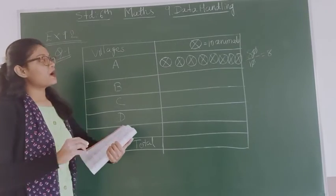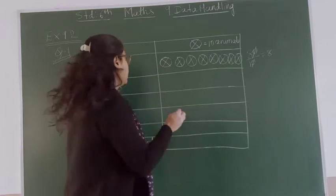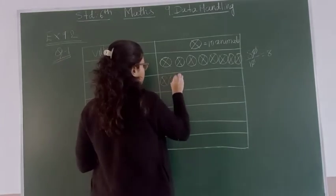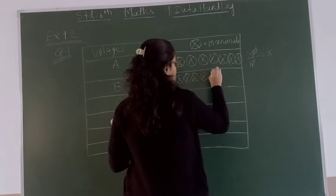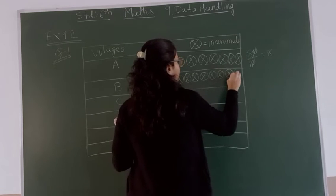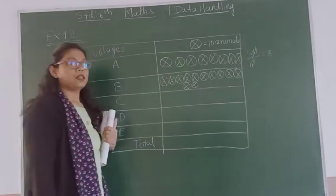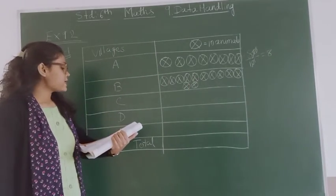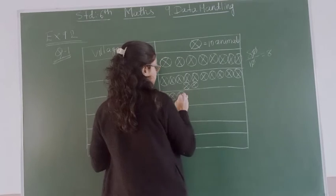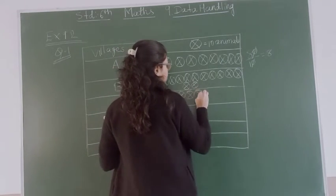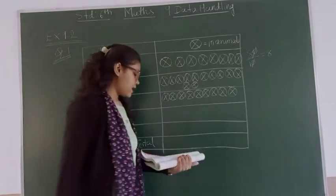Next, village B has 120, so how many symbols you have to draw? 12 symbols: 1, 2, 3, 4, 5, 6, 7, 8, 9, 10, 11, and 12. Now village C has 90, so 9 symbols: 1, 2, 3, 4, 5, 6, 7, 8, and 9.